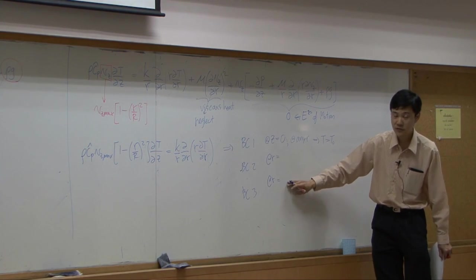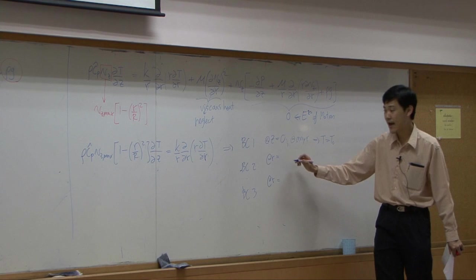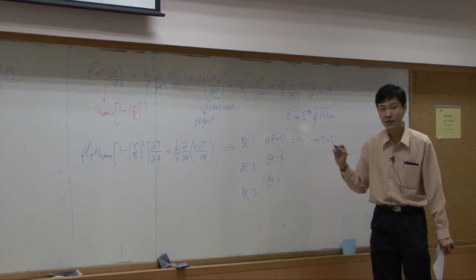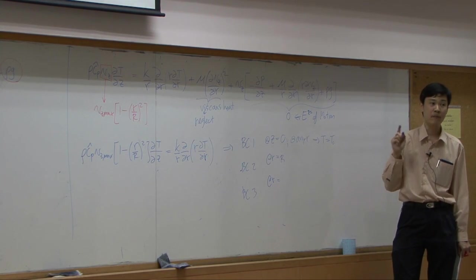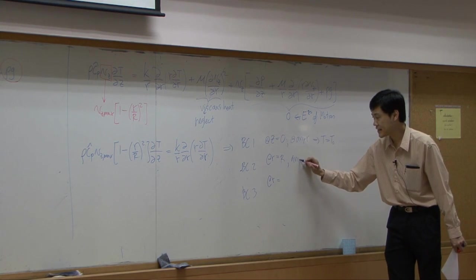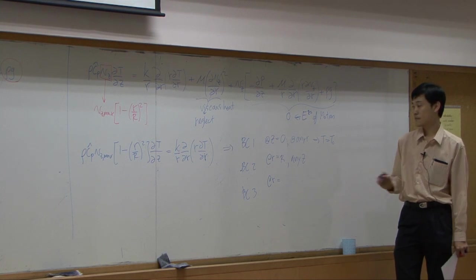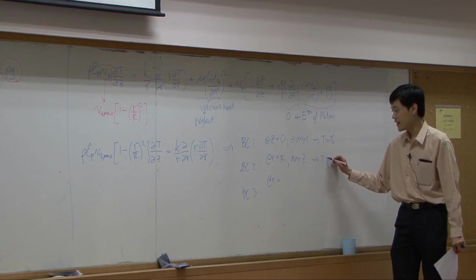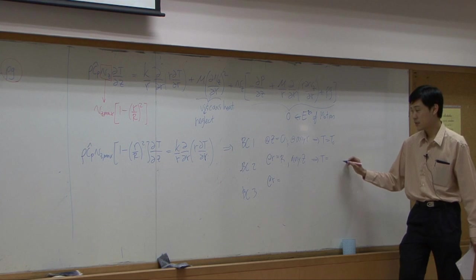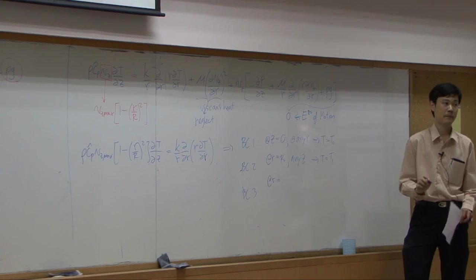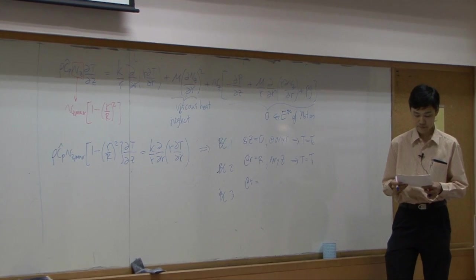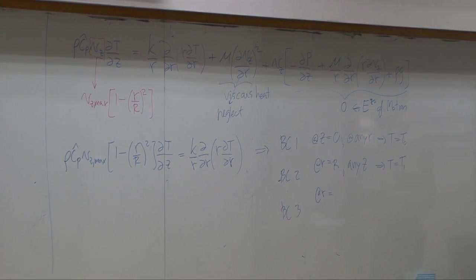For the other two, one supposed to be at r equal to capital R, that's outside of the pipe, any z. You have t equal to t one.